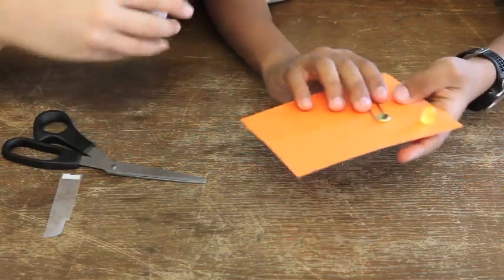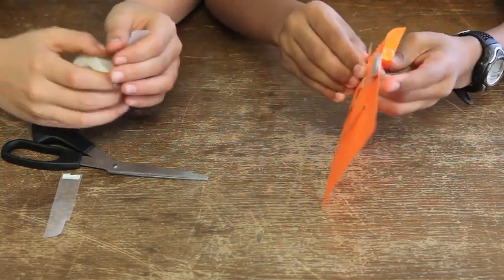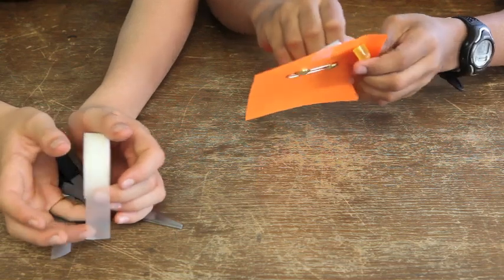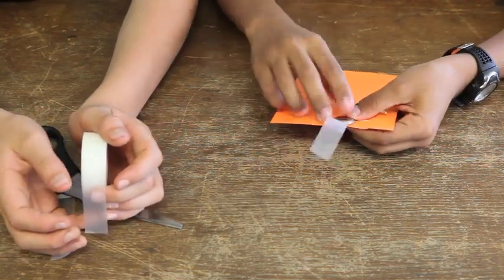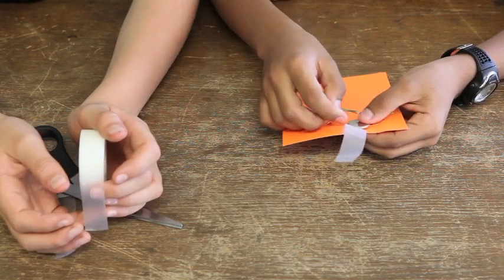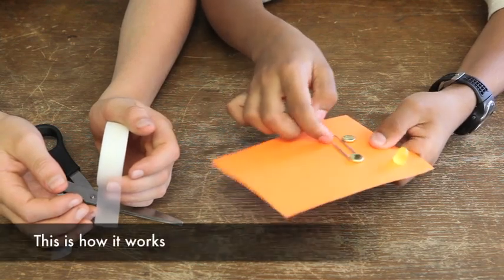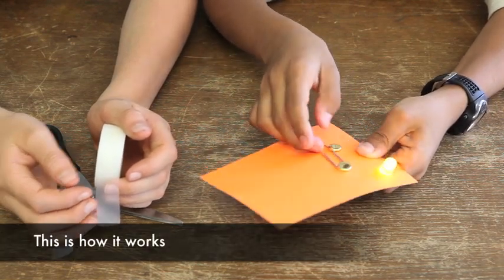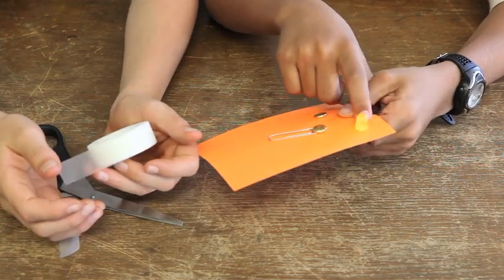And then it doesn't work because the battery is the wrong side, so sometimes you got to flip it. Flip it to the other side. You turn it on and the light comes on. Turn it off, then the light doesn't, it's off.